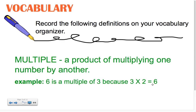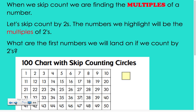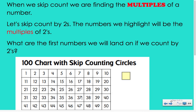Now that you have your vocabulary all ready for this week, let's move on and work with multiples. You should have your hundreds chart with skip counting circle pages — that looks just like the one at the bottom of this page. When we skip count, we're finding multiples of a number. On the first one, we're going to skip count by twos.